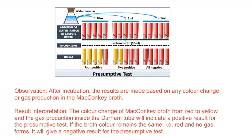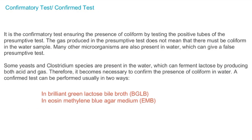We proceed to the confirmatory test. In this test, we use two types of media: Brilliant Green Lactose Bile Broth (BGLB) and Eosin Methylene Blue Agar Medium (EMB). BGLB and EMB are important — their full forms are likely to appear in the exam.